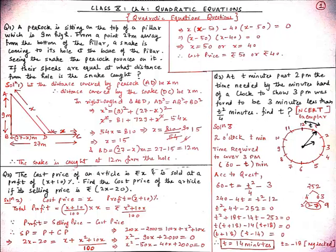Since selling price is (2x − 20), we get: 2x − 20 = x + (x² + 10x)/100. On cross-multiplying: 200x − 2000 = 100x + x² + 10x. Rearranging, we form the quadratic equation: x² − 90x + 2000 = 0.